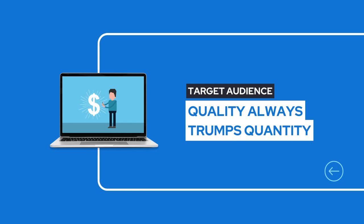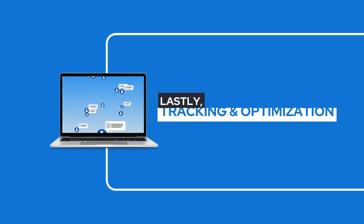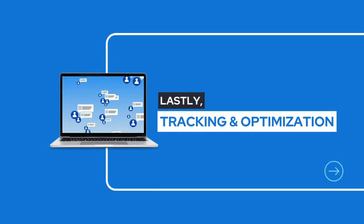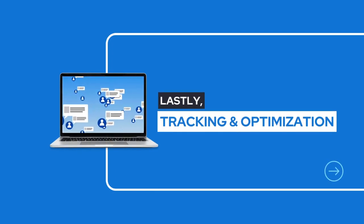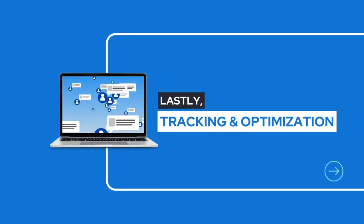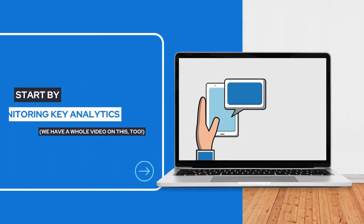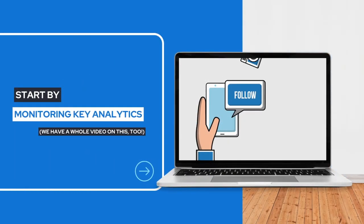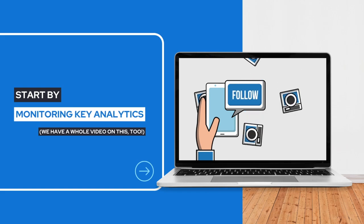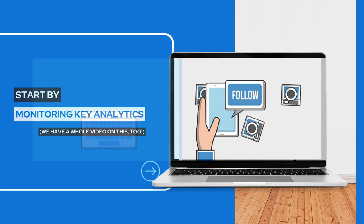In the realm of social media advertising, quality trumps quantity. When it comes to tracking and optimizing your social media ad performance, it's a game of numbers, strategy, and adaptability. You've got to keep an eye on key metrics like click-through rates, engagement rates, and conversion rates to understand how well your ads are performing.